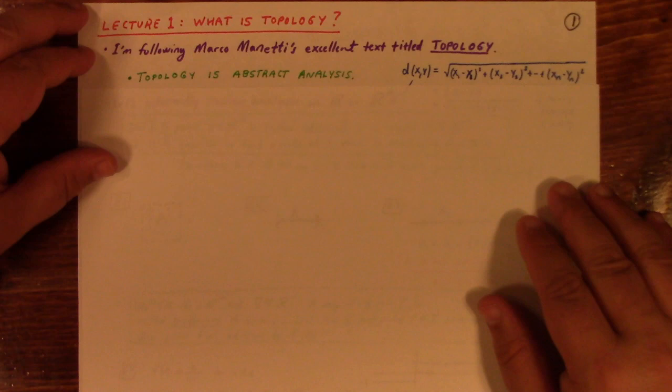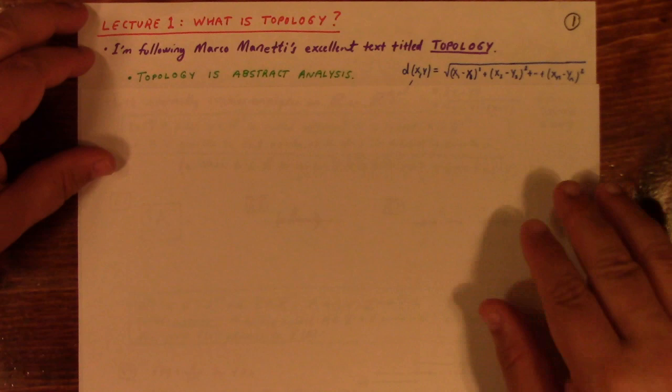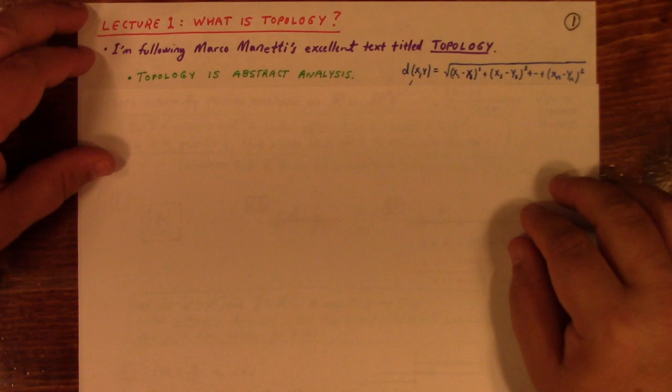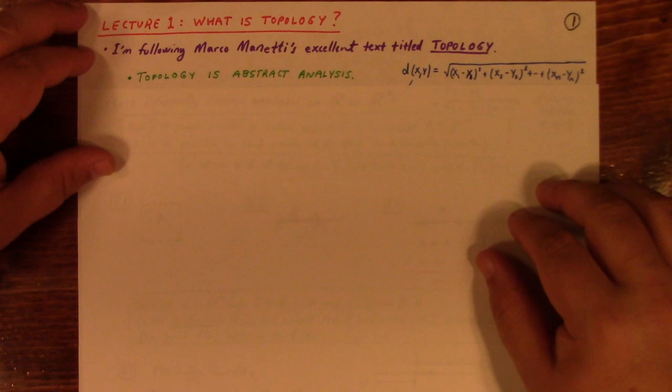So the question is, what is analysis and how is that abstract? Analysis is concerned with, roughly speaking, continuity of maps and properties of particular kinds of sets.